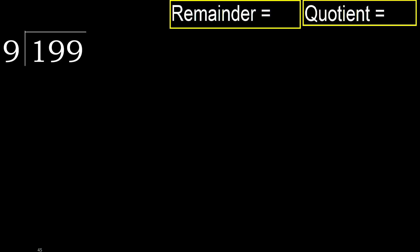199 divided by 9. 1 is less, therefore next. 19 is not less, therefore with 19 and 9.